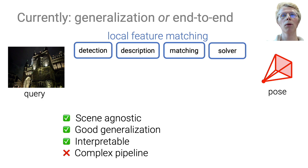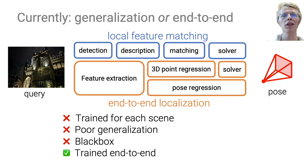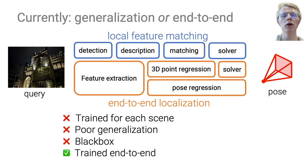Current approaches to this problem belong to two categories. The classical pipeline detects local features, describes and matches them, and finally solves for the pose. Multiple of these blocks can be learned individually, but training end-to-end is difficult. Instead, recent approaches like DSAC employ a single convolutional neural network to regress geometric quantities like 3D points. The CNN recognizes specific scene features and predicts the 3D coordinates or the corresponding viewpoint. The weights of the CNN therefore encode the 3D structure or the reference views and often cannot generalize to new scenes.